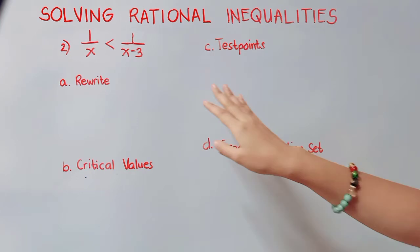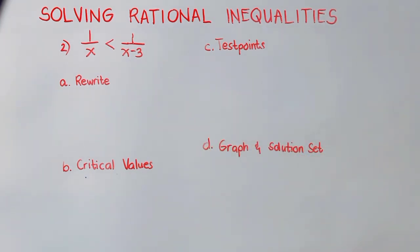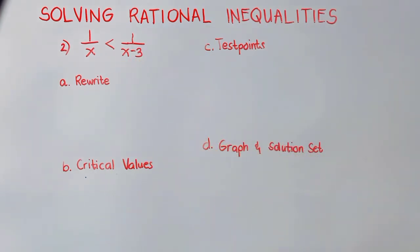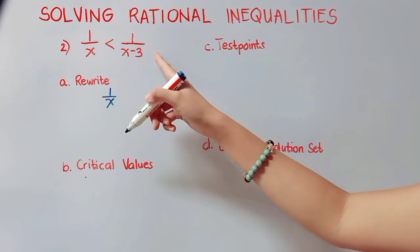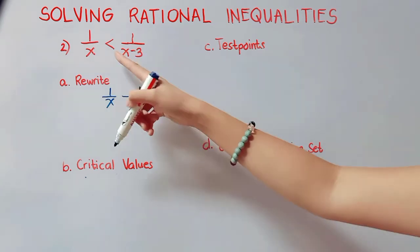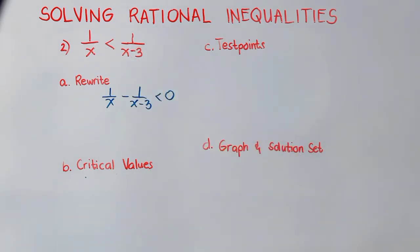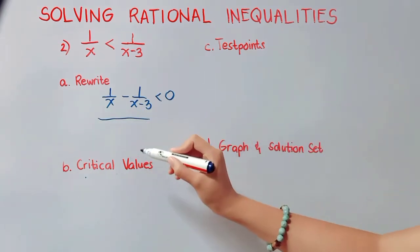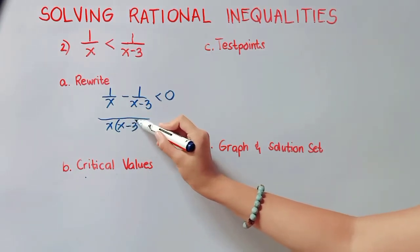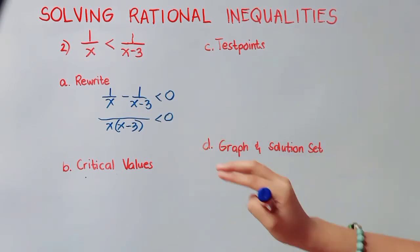Number 2: 1 over x is less than 1 over x minus 3. As you can see, the right side is not 0, so we have to do something first. Transposing the rational expression from positive to negative, we copy the inequality symbol: less than 0. Our left side should have only one rational expression, so we perform subtraction, where our LCD is x times quantity x minus 3.